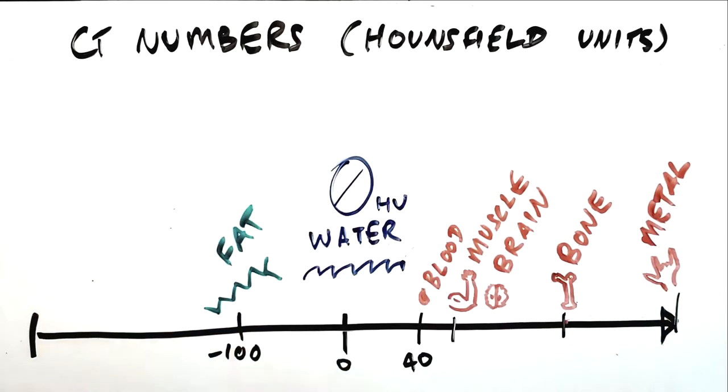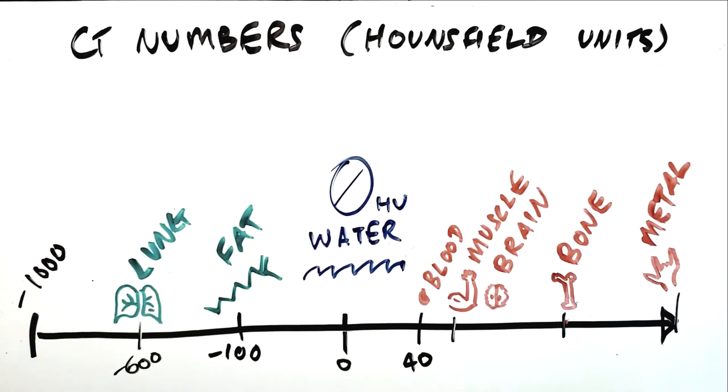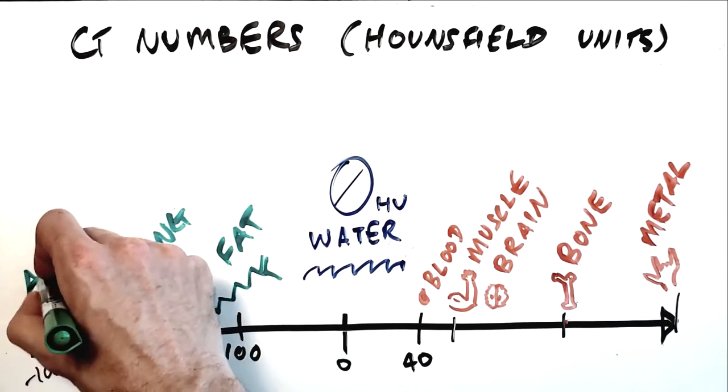The CT number of anything which attenuates more x-rays than water, blood, muscle, brain, solid organs, bone, or metal, those are all greater than zero Hounsfield units.